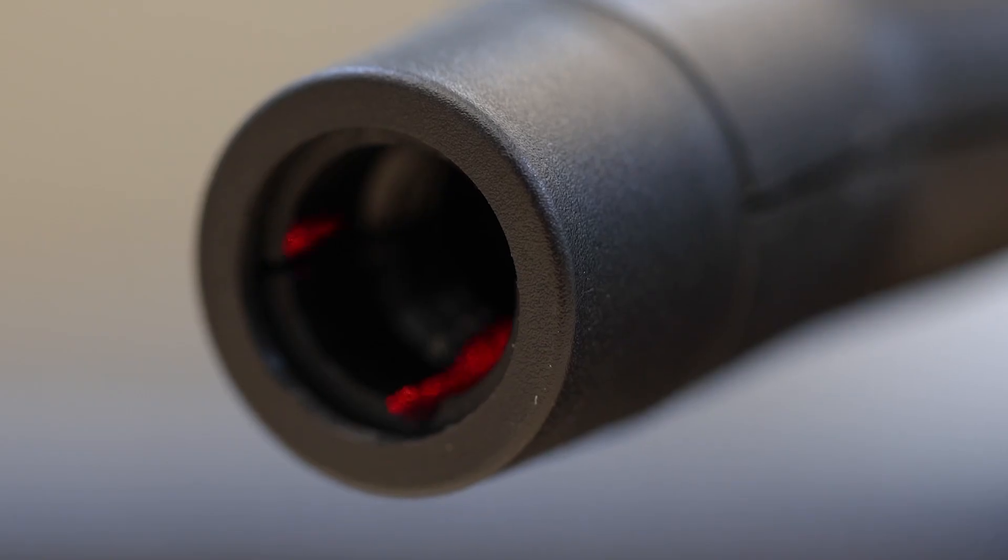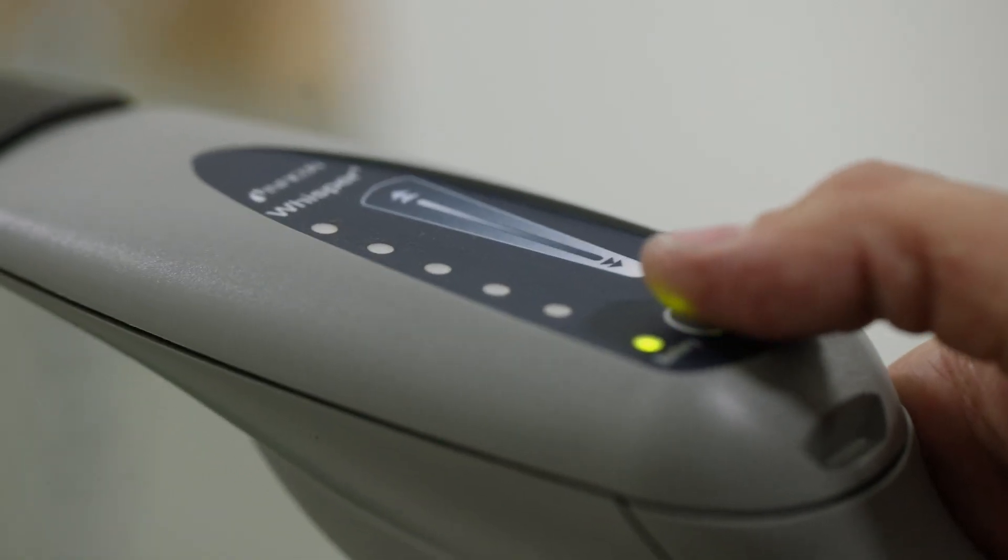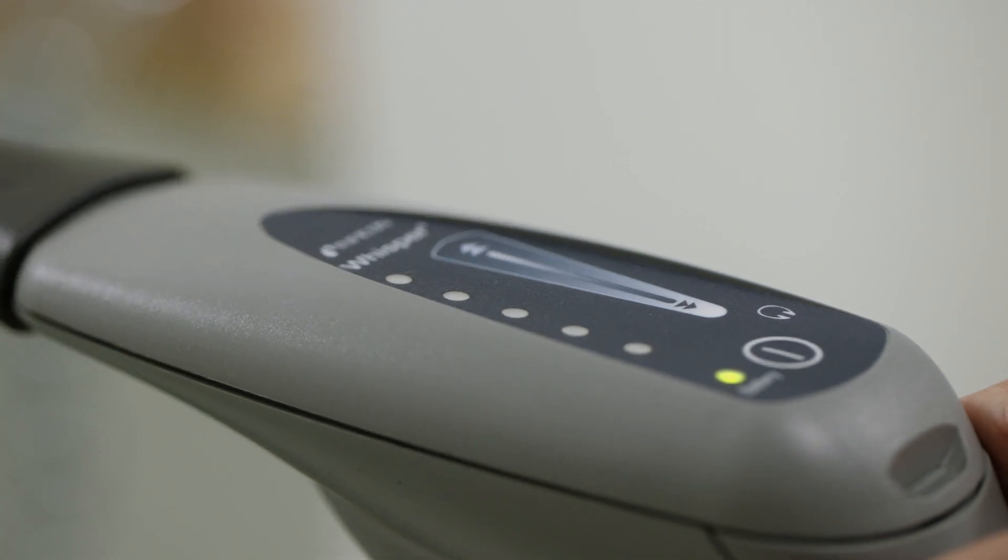Whisper is equipped with a laser pointer to make finding leaks even simpler. To enable or disable the laser, quickly press the power button.